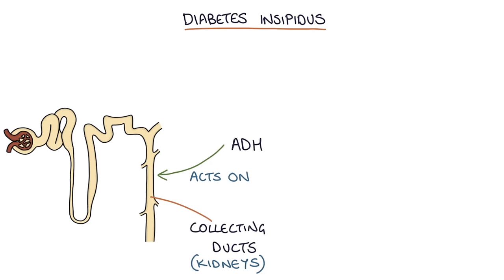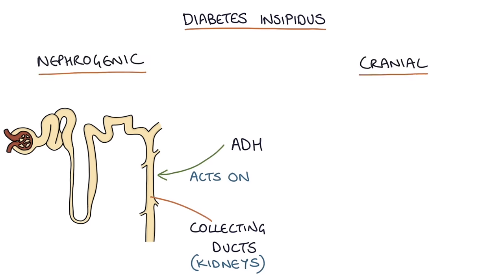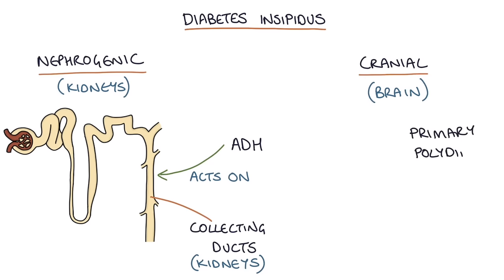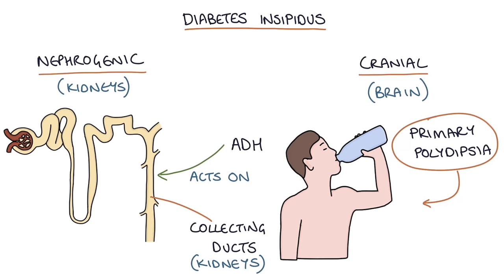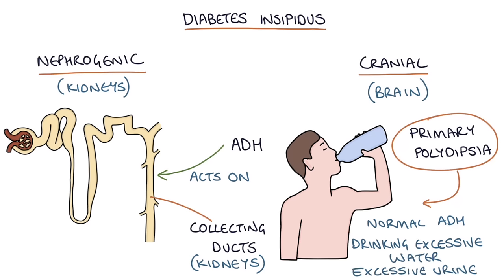It can either be classified as nephrogenic or cranial diabetes insipidus depending on whether the problem is in the kidneys or in the brain. A key differential diagnosis of diabetes insipidus is primary polydipsia, and this is where the patient has a normally functioning ADH system but they're drinking excessive quantities of water, leading to excessive urine production. They don't have diabetes insipidus, but they present with polyuria and often polydipsia.